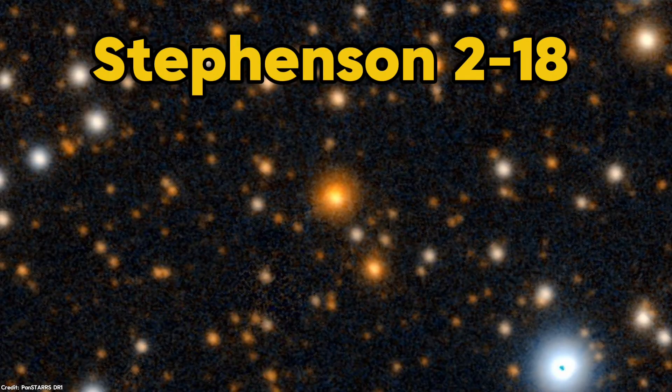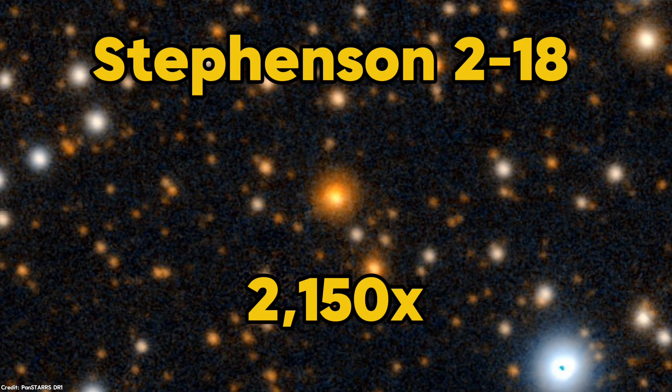Because yes, there is Stevenson 2-18 with an estimated radius of 2,150 times the radius of the sun, but this measurement is unreliable and it's likely not even a member of the cluster that we think it's part of, which would affect its radius, meaning it's likely actually smaller than that. Anyway, moving on.